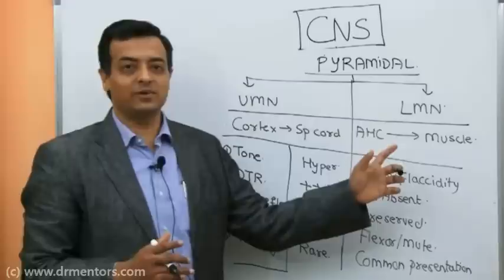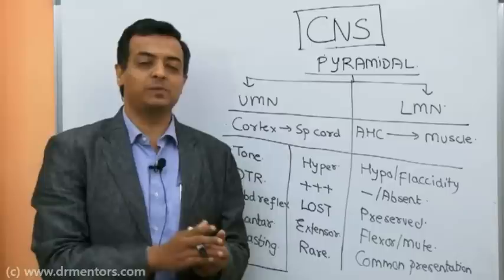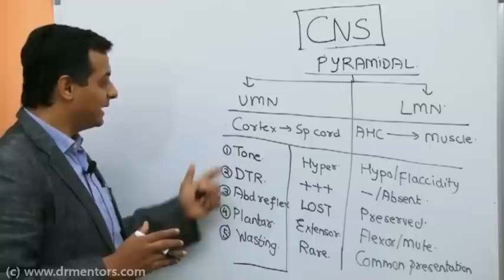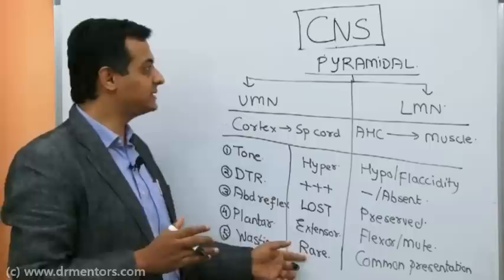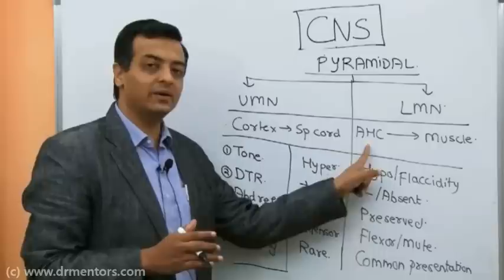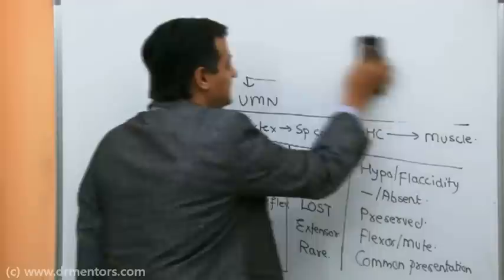If three out of five components belong to the UMN column, the lesion is in the upper motor neuron — between cortex and spinal cord. If three belong to LMN, the lesion lies between anterior horn cell and muscle. This is how we localize the lesion, and based on this anatomical axis we will classify all CNS disorders.